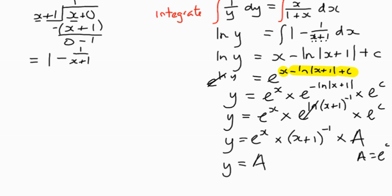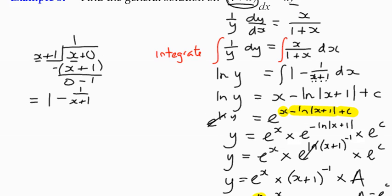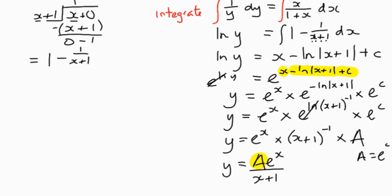So we can finish that off by saying that y is equal to this multiplier A times e to the x over x plus one. Now we don't need a plus c because the constant has changed from a plus c to multiplied by A, and that becomes our constant. And that is the solution to the differential equation. Hopefully that makes some sense. You can go and have a practice of a few more like that.